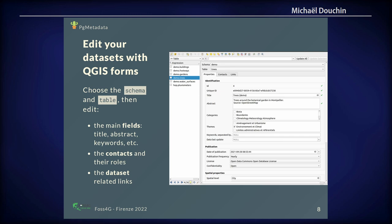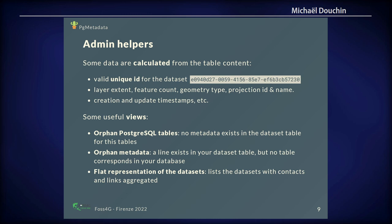So you edit your metadata, for example for the tree table, and then there is some logic underneath — some data are calculated from the table content. For example, there is a valid unique ID for the dataset. We can compute the layer extent, the number of features, the geometry type, the projection ID and name. PostgreSQL triggers give us the capability to do that. We have also created useful views to know the orphan PostgreSQL tables — which tables in your database do not have metadata — and the opposite, orphan metadata, which occurs when you had edited metadata for a table but then dropped the table.